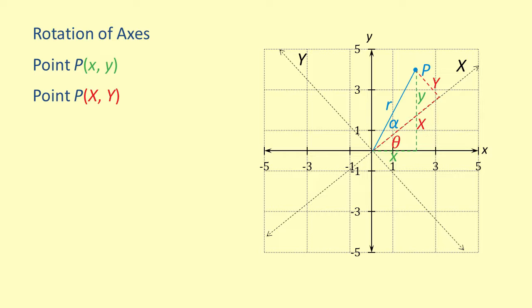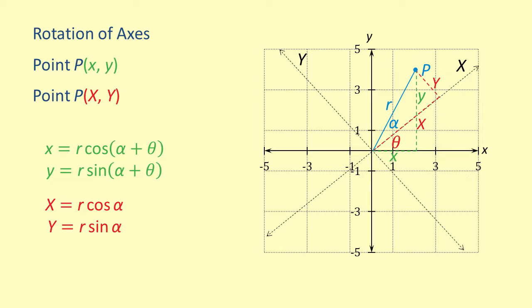We can now represent point P in polar coordinates using the following relationships: x equals r times cosine of the quantity alpha plus theta, y equals r times sine of the quantity alpha plus theta, capital X equals r times cosine of alpha, and capital Y equals r times sine of alpha.